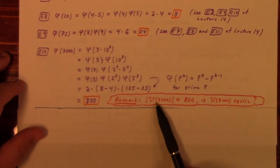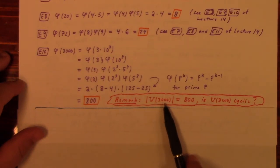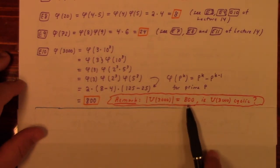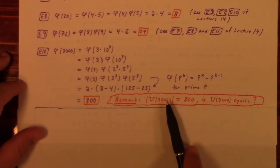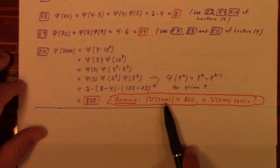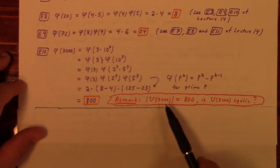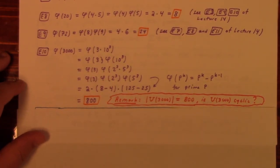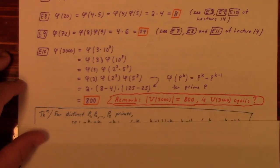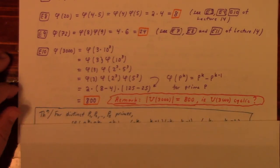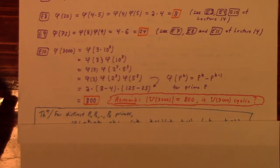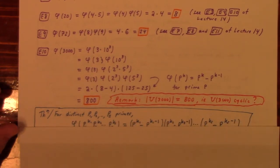That proves the order of the group of units mod 3000 is 800. But is it cyclic? Is there one number that will generate all 800 elements — an element of order 800 in this group? We'll spend the next section gaining tools to answer that question.